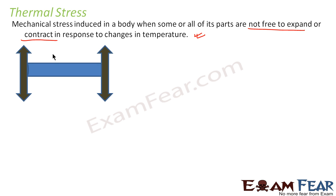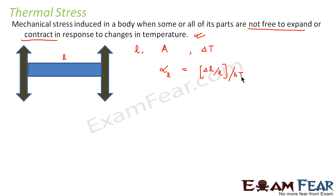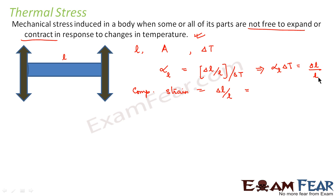Now let us suppose the length of this rod is L, and the cross-sectional area of the rod is A. The temperature increases by delta T. As per the definition, the coefficient of linear expansion alpha will be equal to (delta L / L) divided by delta T. Therefore, the compressive strain that develops in the rod is delta L by L, which we can write as alpha L into delta T. So this is the compressive strain.